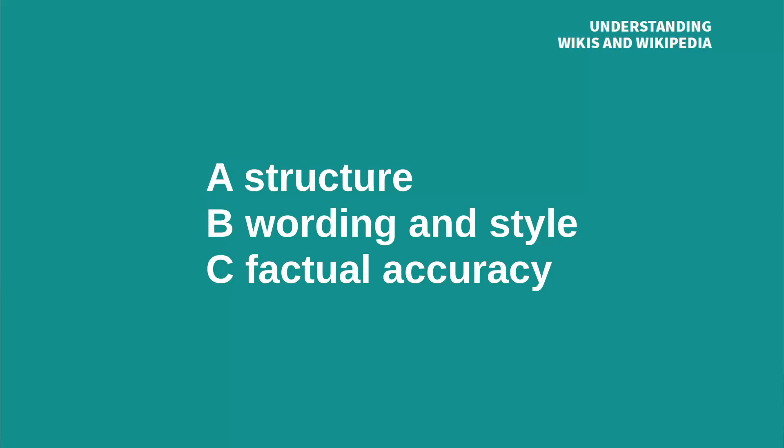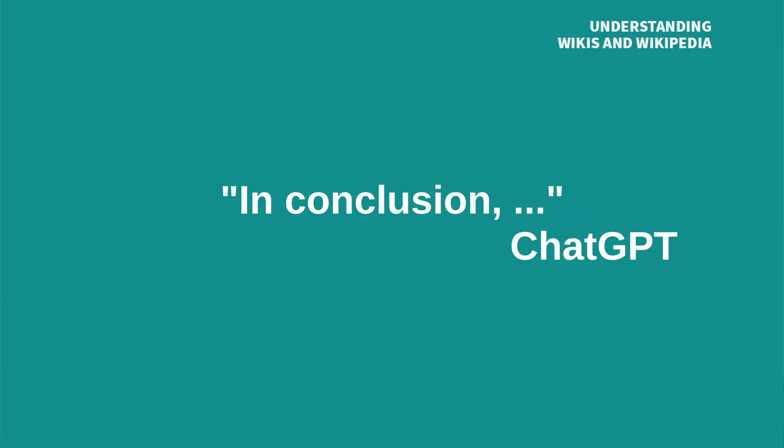But let's check out the English original. From an encyclopedic article, I expect: A. a certain structure, B. a certain wording and style, and C. that the text is factually correct. First, I like that the text starts with the definition. What we don't have in an encyclopedia is the last paragraph — "In conclusion."